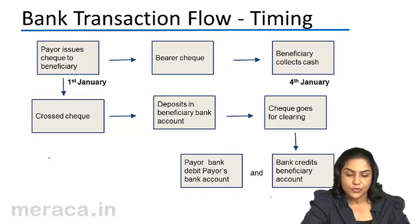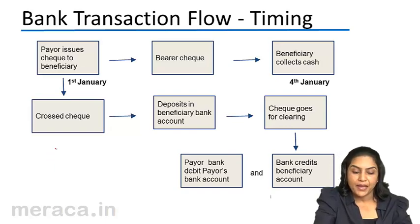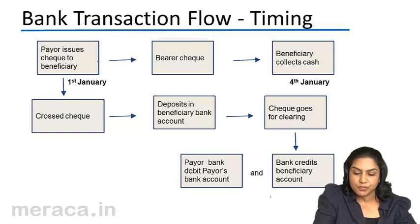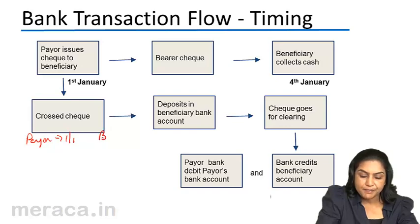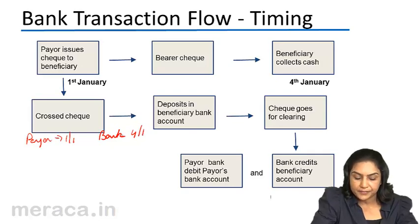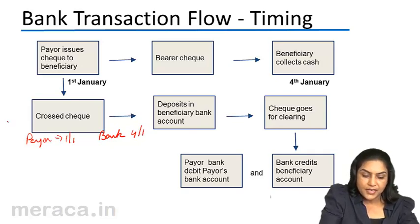As a result, we see that the payer passes entries in his books on 1st January, but his bank passes the entries only on 4th January. This is in the case of a bearer check.